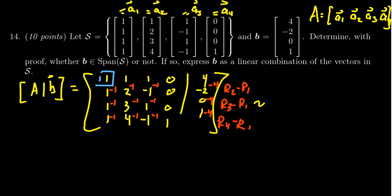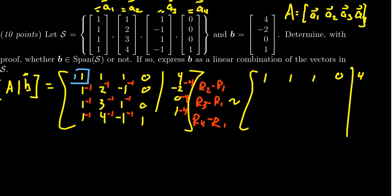And so then write down the next matrix here. The first row stays the same: 1, 1, 1, 0, 4. I'm going to give myself a little bit more space here. Just scooch it to the right.